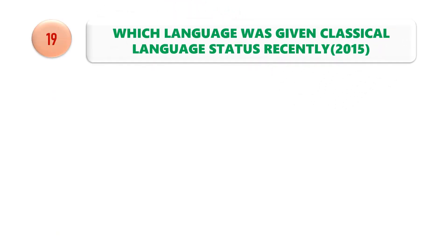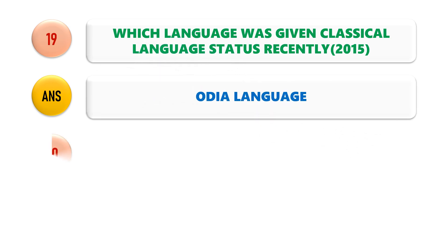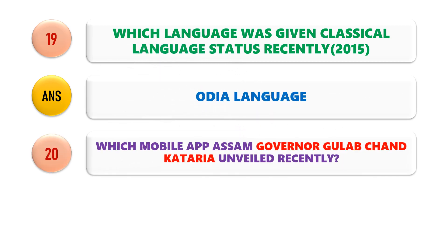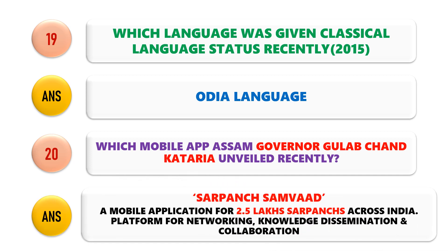Question No. 19: Which language was recently given classical language status? The answer is the Odia language. Question No. 20: Which mobile app did Assam Governor Gulab Chand Kataria unveil recently? The answer is Sarpanch Samvad, a mobile application for 2.5 lakh Sarpanches across India.